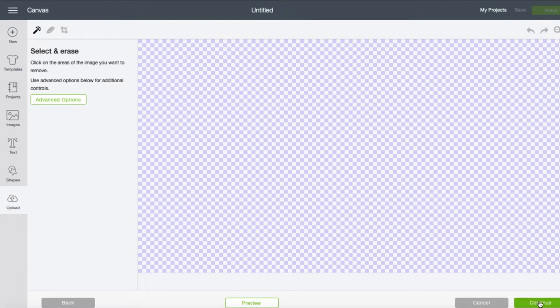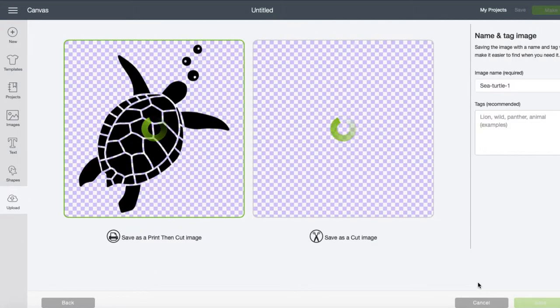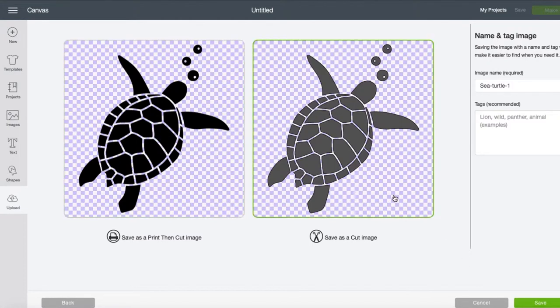Now hit continue and then press continue one more time. We're going to make sure that we save as a cut image, and we're just going to hit the save button.